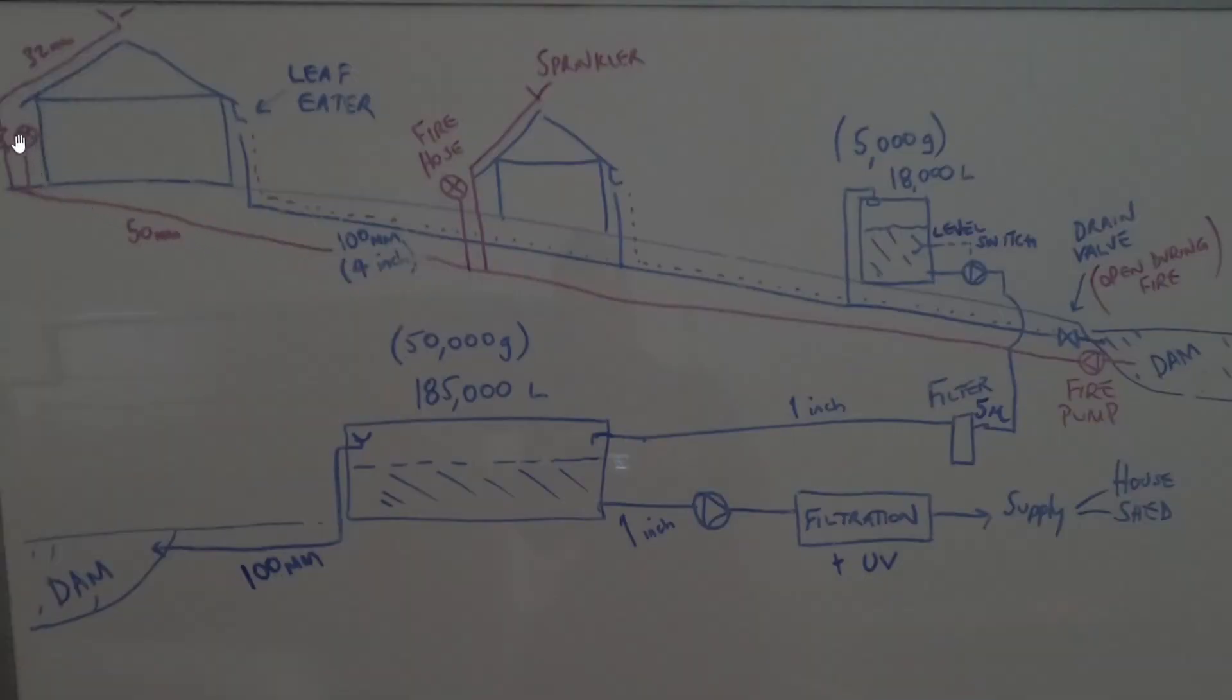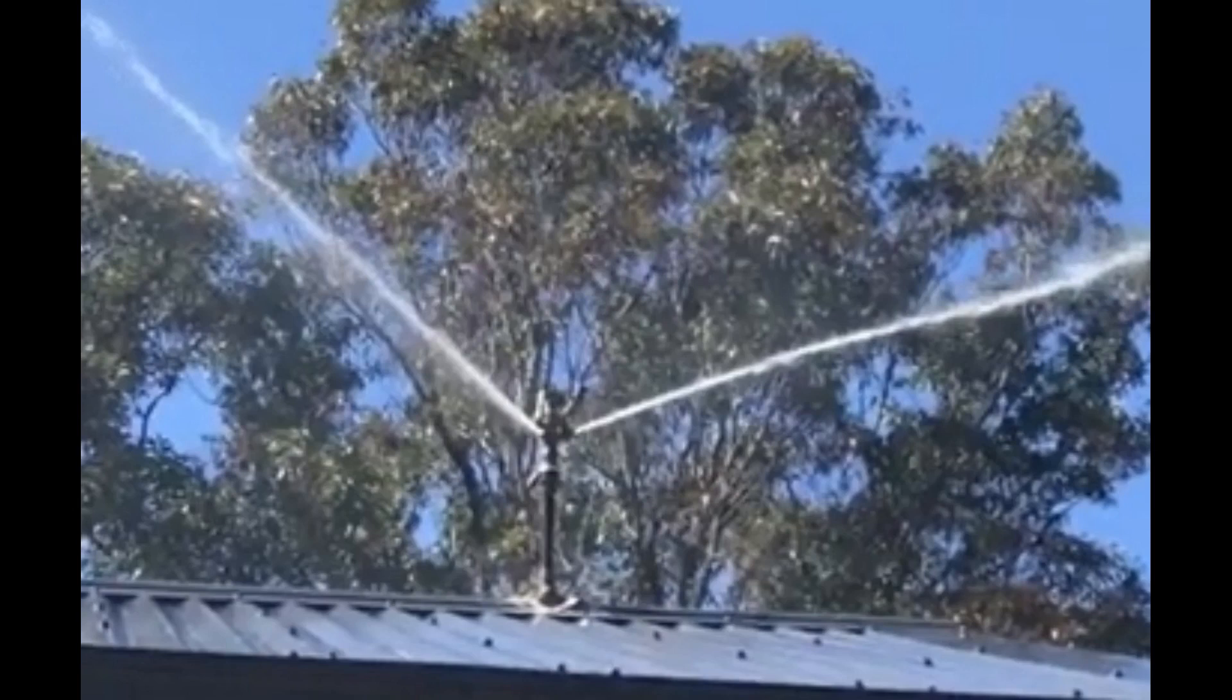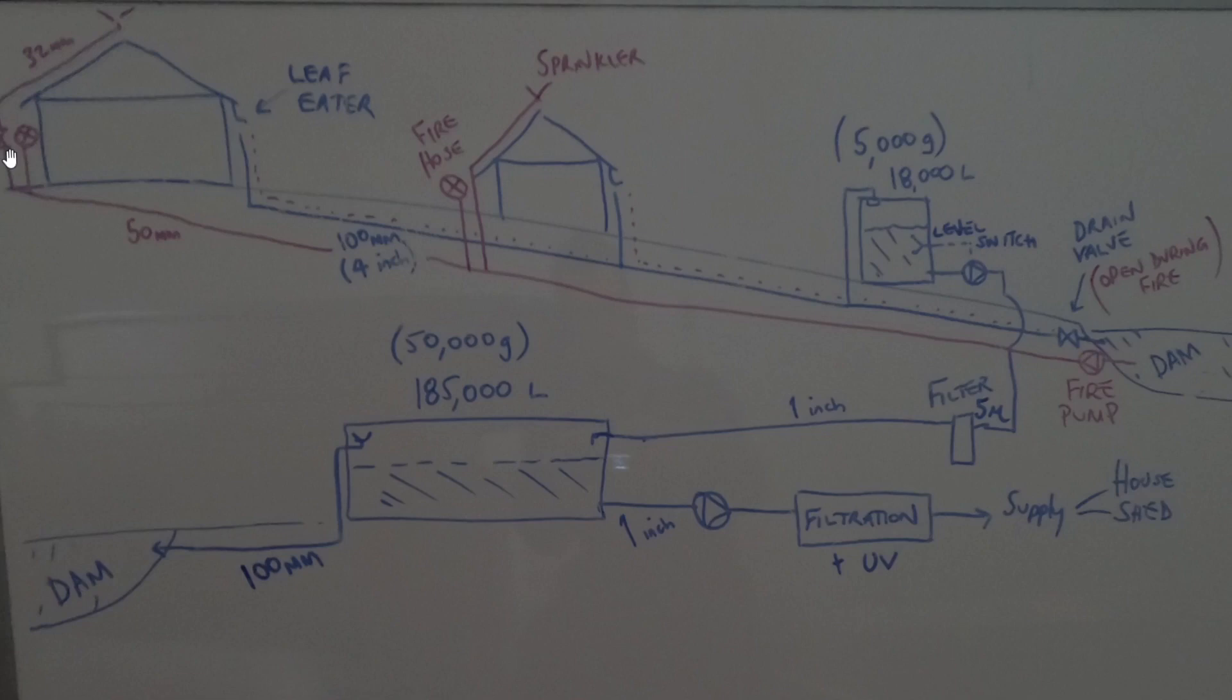When there's a bushfire and I turn my pump on, it'll be a diesel pump because I don't want to rely on the mains power. The sprinklers will be on the roof and they will go through the same system as my rainwater. So during a bushfire it will be dam water which is not that clean, it'll go through that same collection pipe. It won't go through to my rain tank because during a fire I'll have that valve at the bottom open.